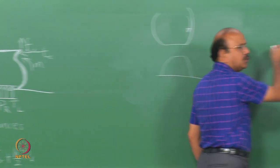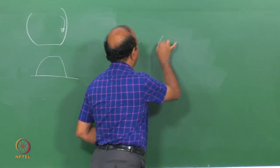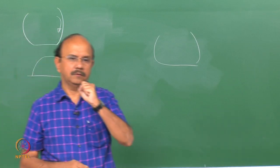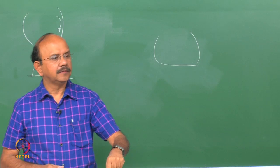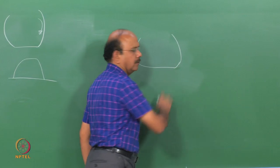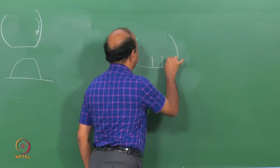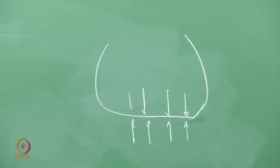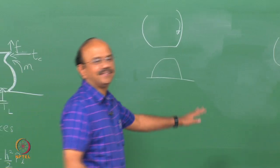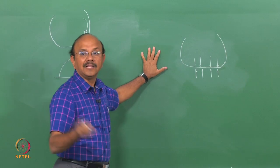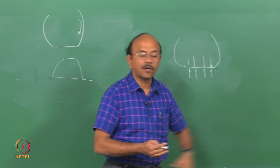If this tyre were made up of a membrane whose bending stiffnesses are very low — say you take a balloon, blow it, and press it on the ground — the contact pressure will be uniform. Contact pressure would just equilibrate the inflation pressure, so theoretically the contact pressure would be uniform when there is no bending stiffness or other factors involved.